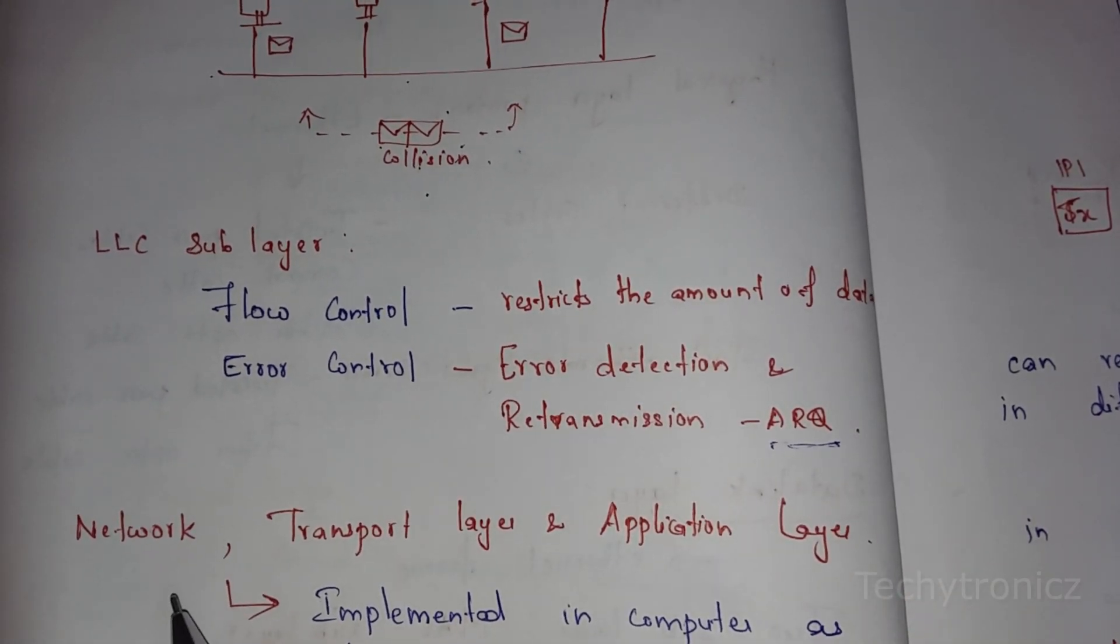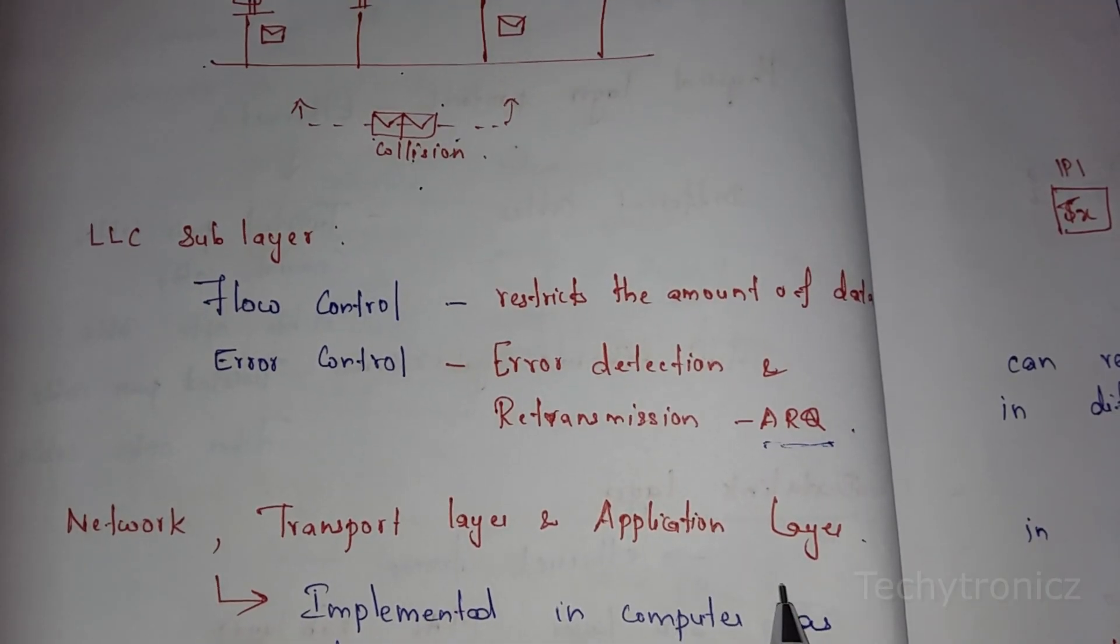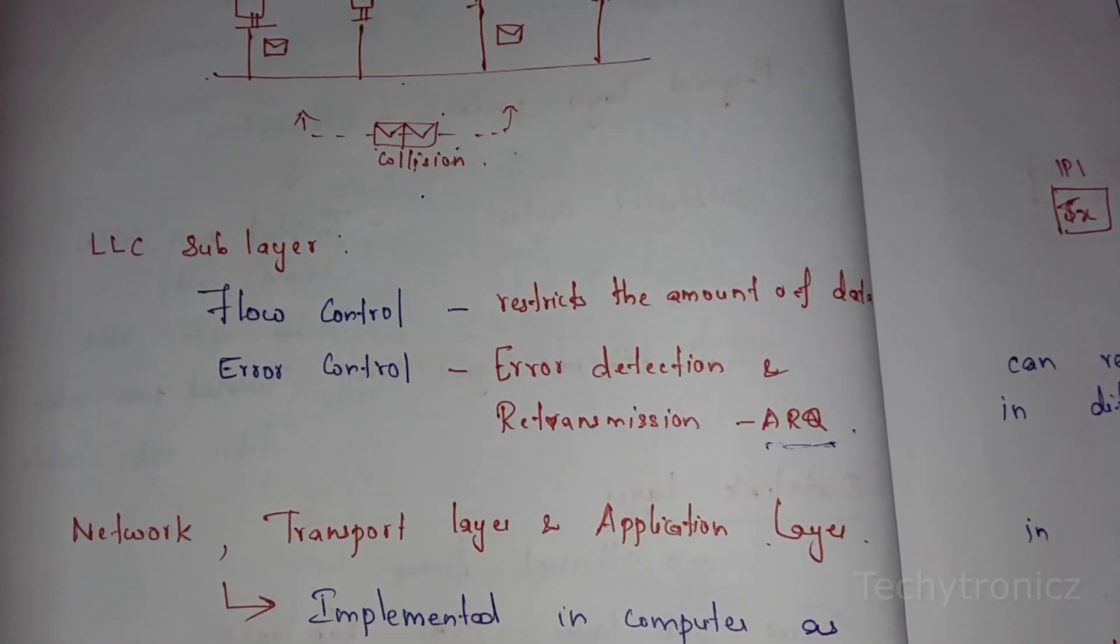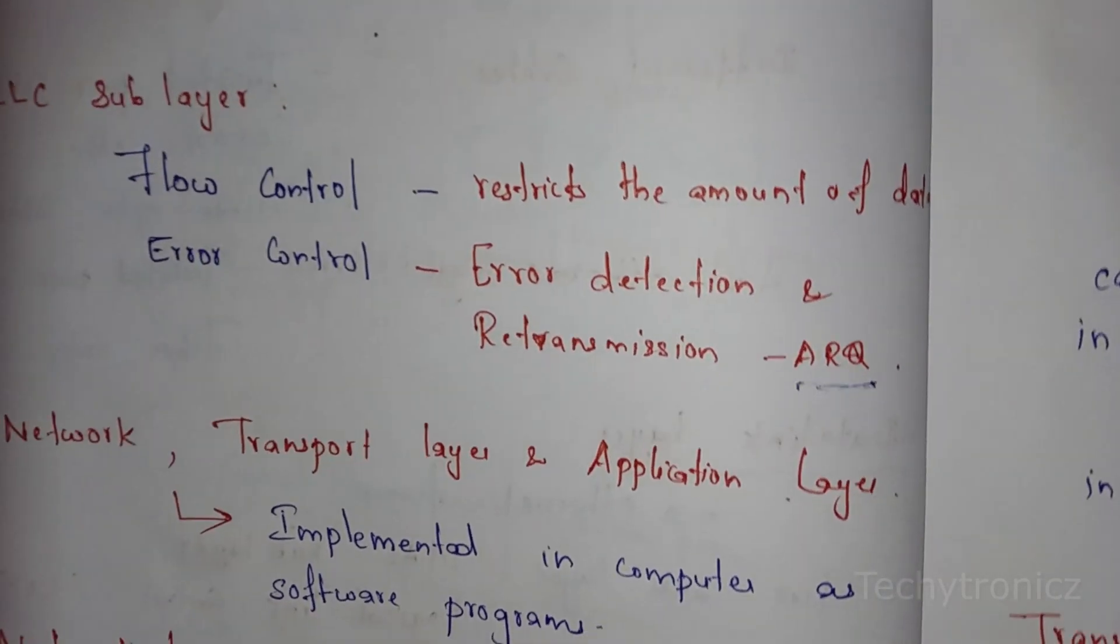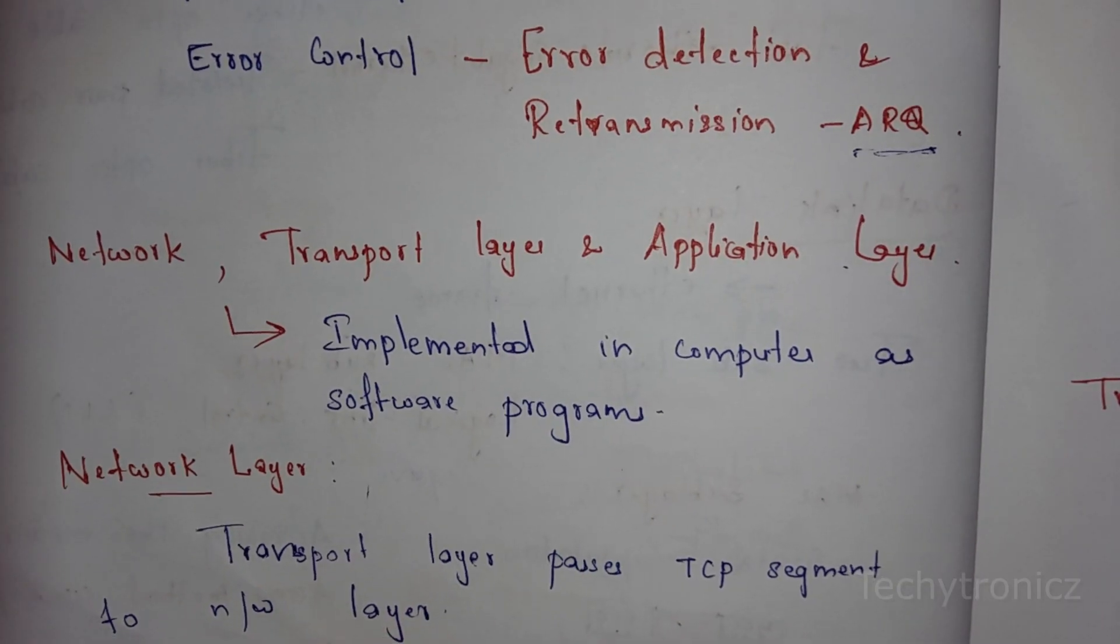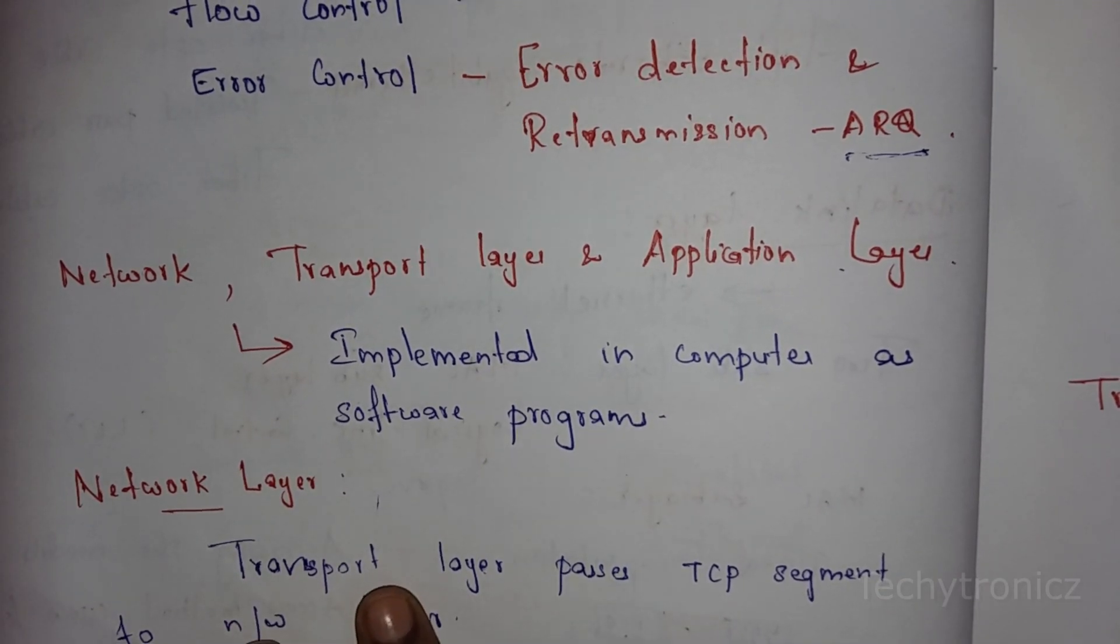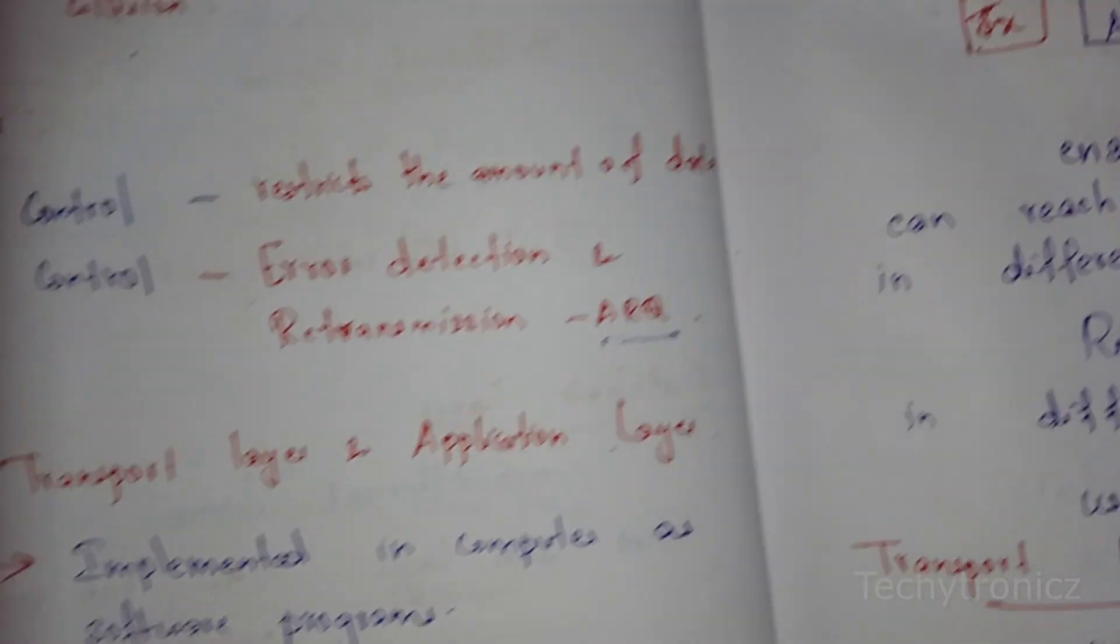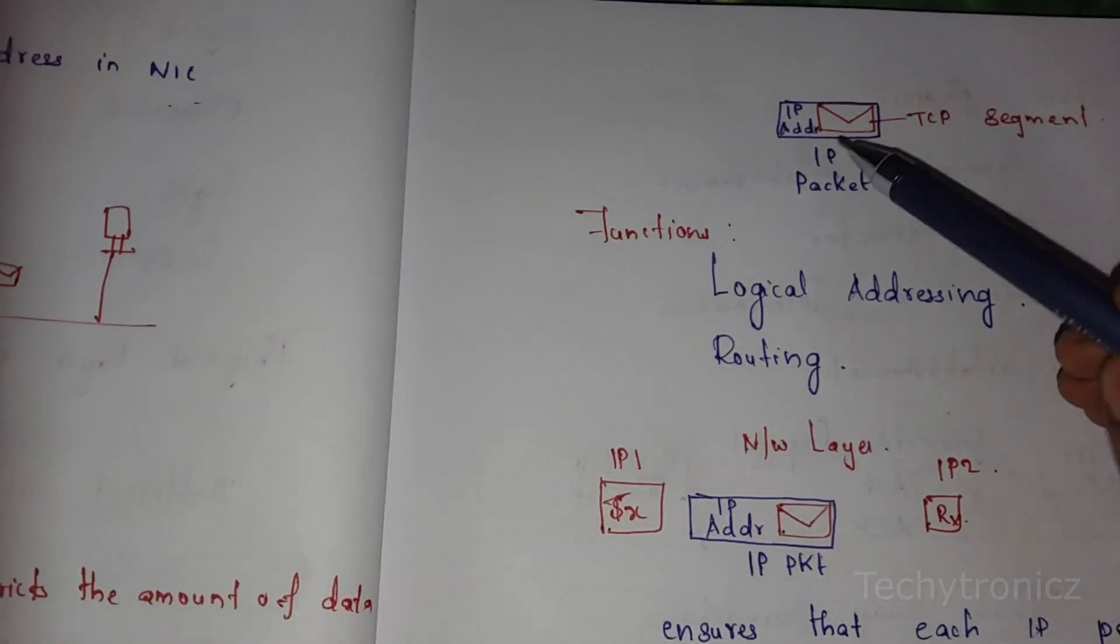The remaining three layers in TCP/IP are the Network Layer, Transport Layer, and Application Layer. Let's see them one by one. The Network Layer receives messages from the Transport Layer.